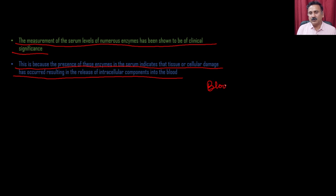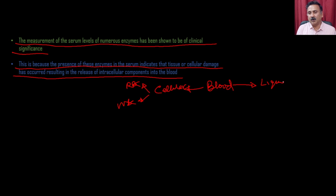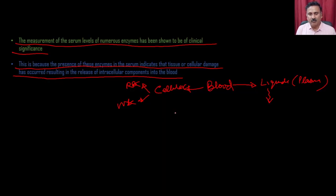All the organs are actually communicating with each other with the help of the blood. The blood has two components: one is the cellular component, where you have different types of cells like RBCs and WBCs, and the other component is the liquid component, which is also called as the plasma. The plasma is the component which communicates between the different types of organs.